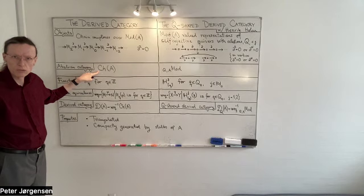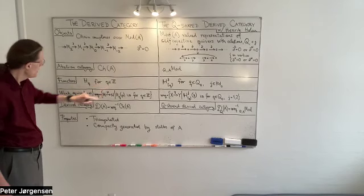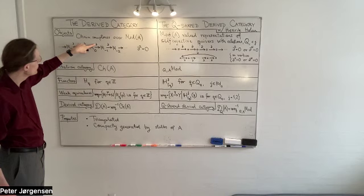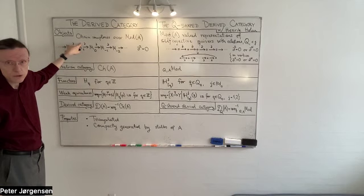h_q, q is an integer. Say that you wanted h_0, how would you compute it? Well, you would stand here in degree 0, you would take the kernel of that differential, modulo the image of that differential. These morphisms are frequently referred to as differentials. So kernel modulo the image, and you can do this at each position. This defines homology functors.